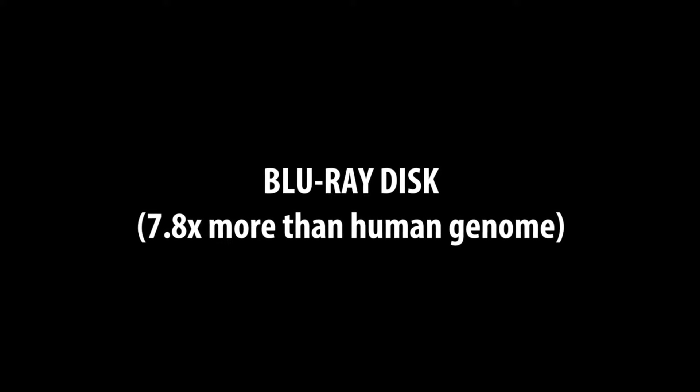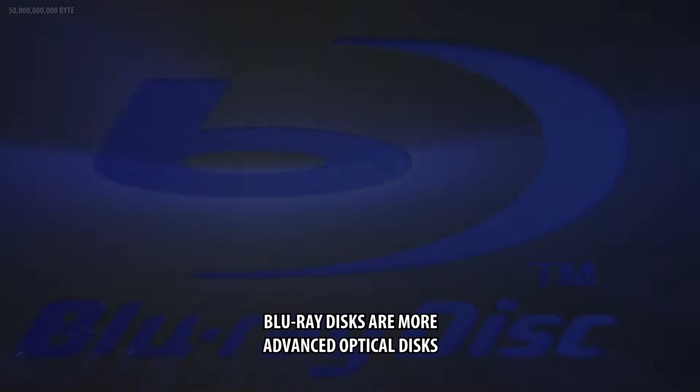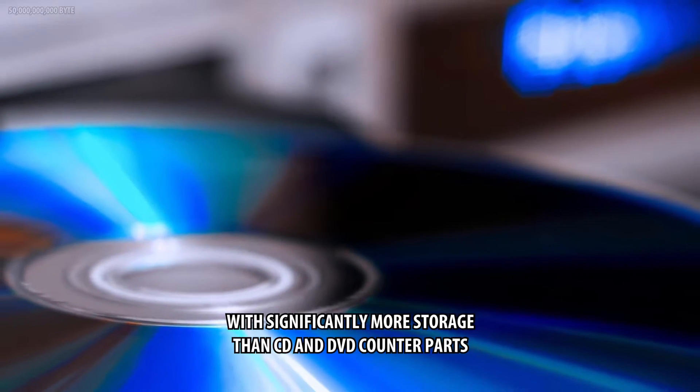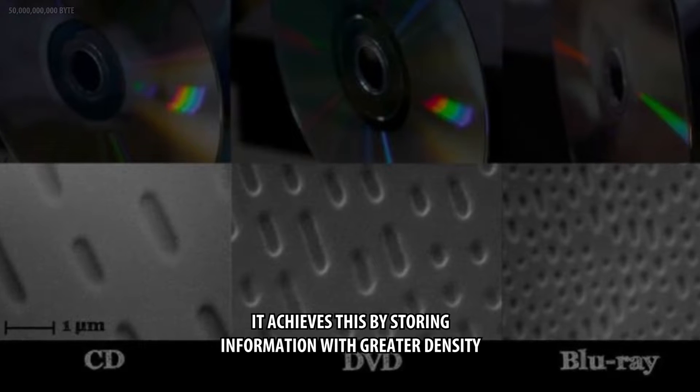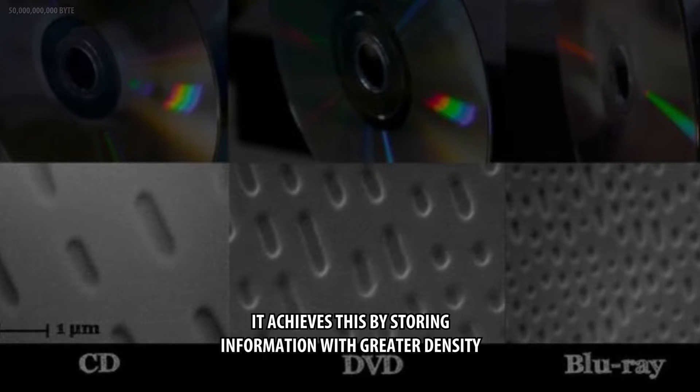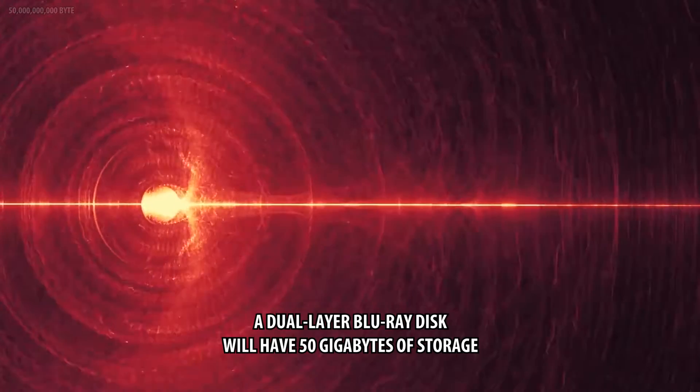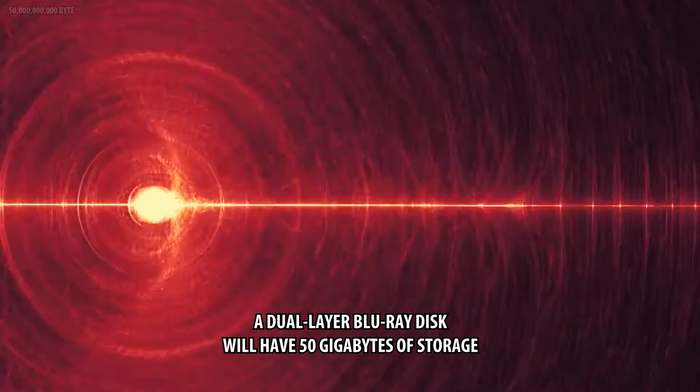Blu-ray discs, 7.8 more than human genome. Blu-ray discs are more advanced optical disks with significantly more storage than CD and DVD counterparts. It achieves this by storing information with greater density. A dual-layer Blu-ray disc will have 50 gigabytes of storage.